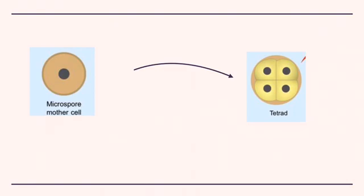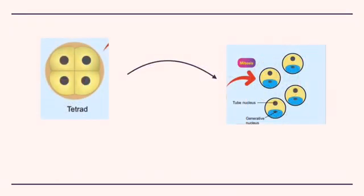These four microspore cells are collectively known as a tetrad. Each cell in the tetrad develops into a pollen grain. The nucleus in the pollen grain divides by mitosis to produce two nuclei, namely the generative nucleus and the tube nucleus. The wall of the pollen sac, which is thick and waterproof, breaks when the pollen grains are released.